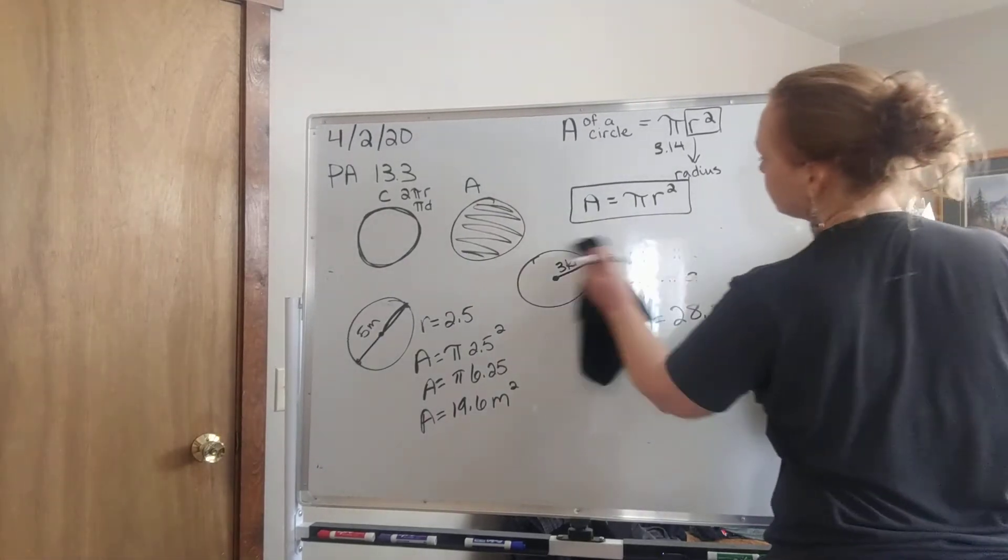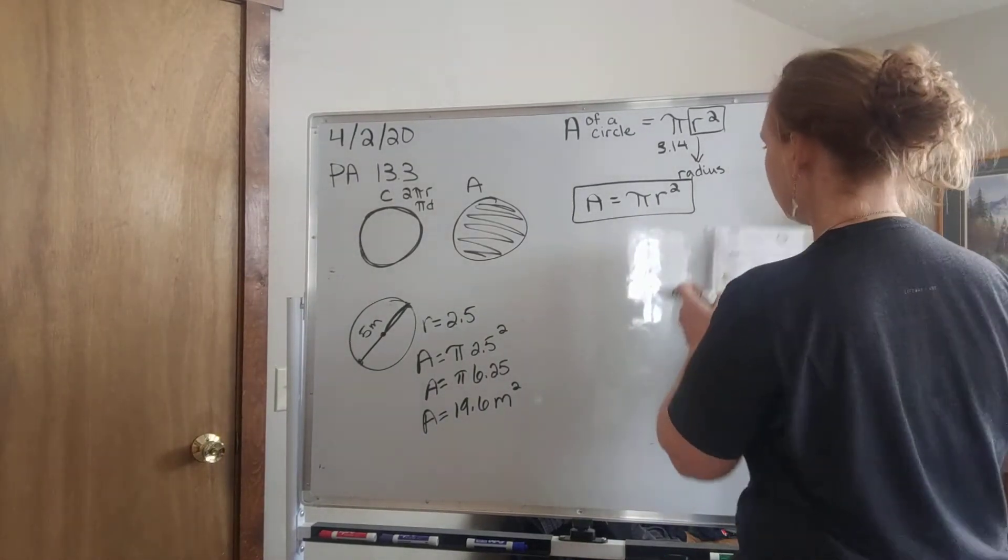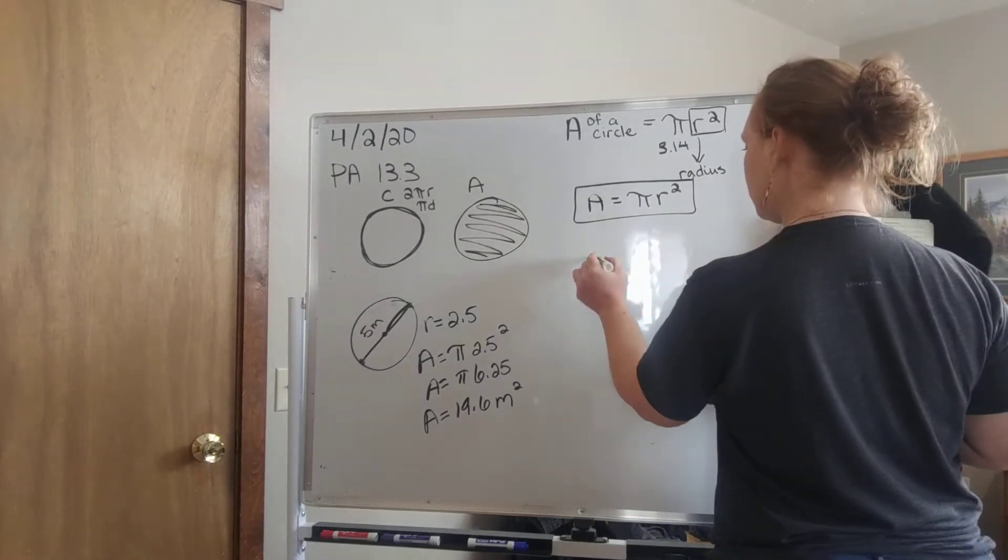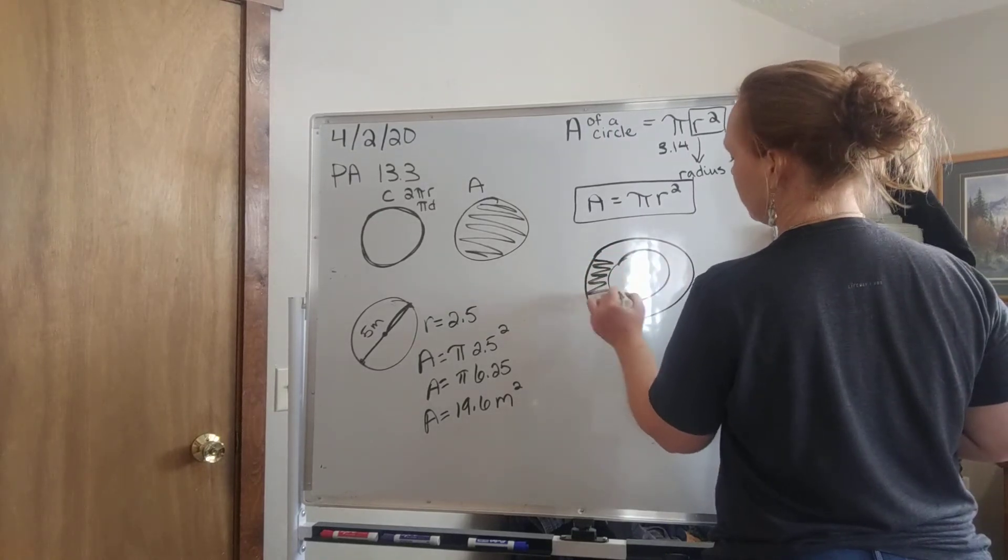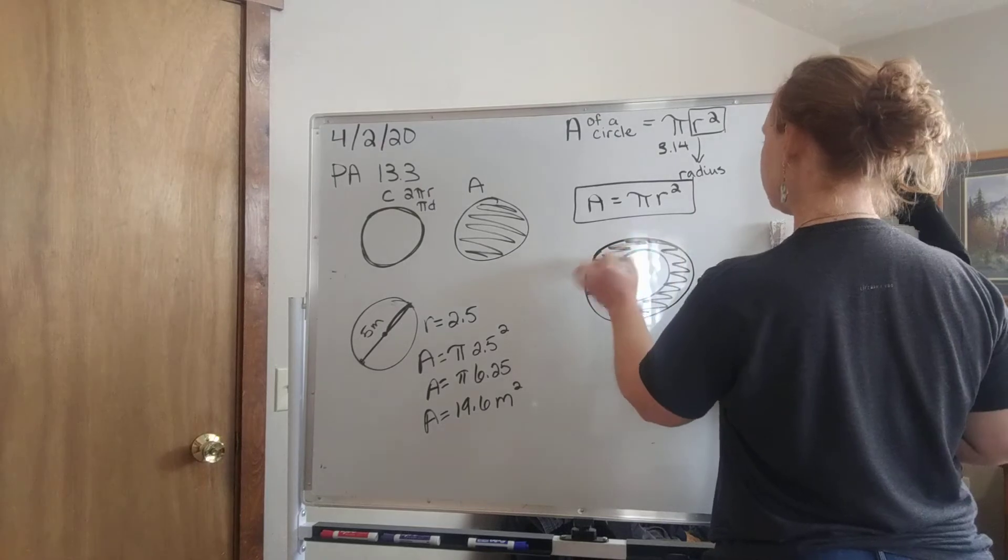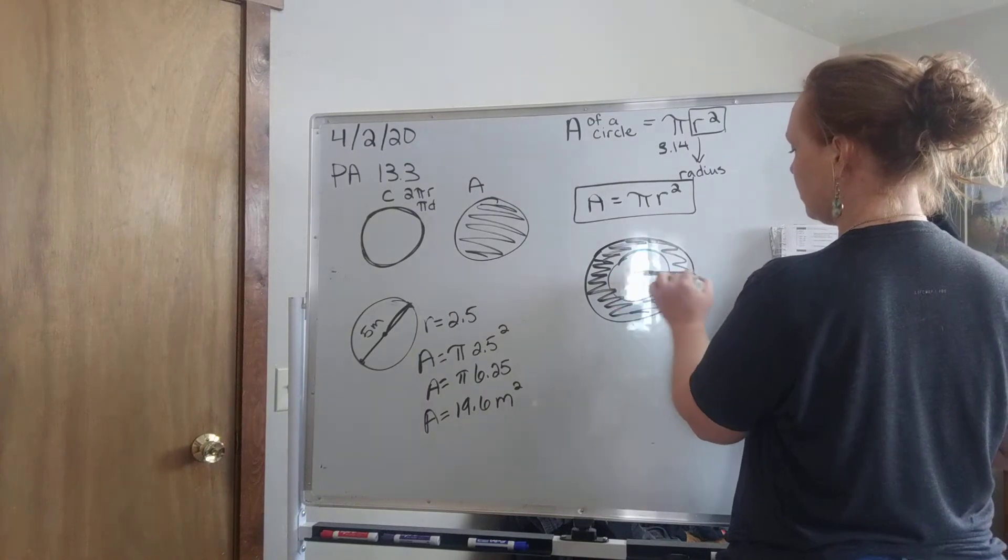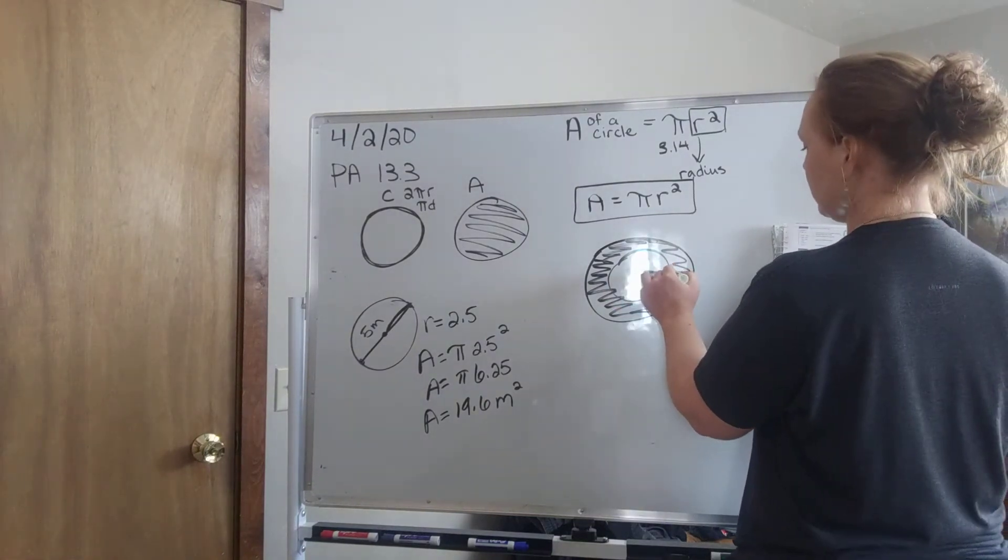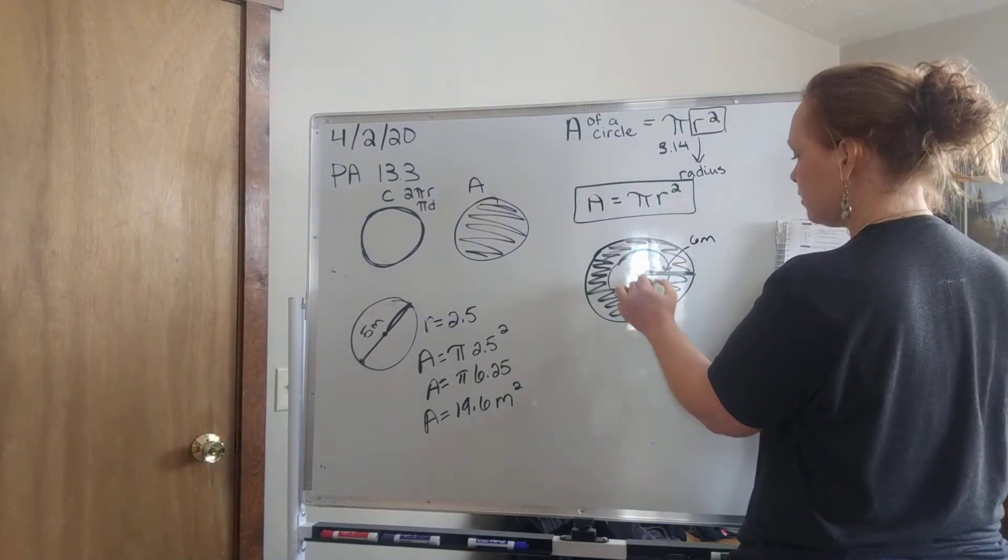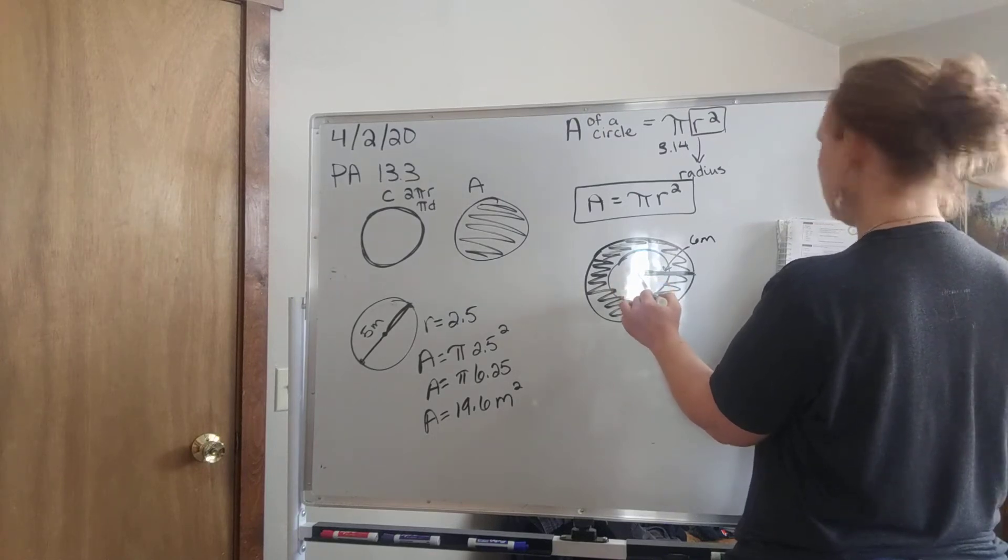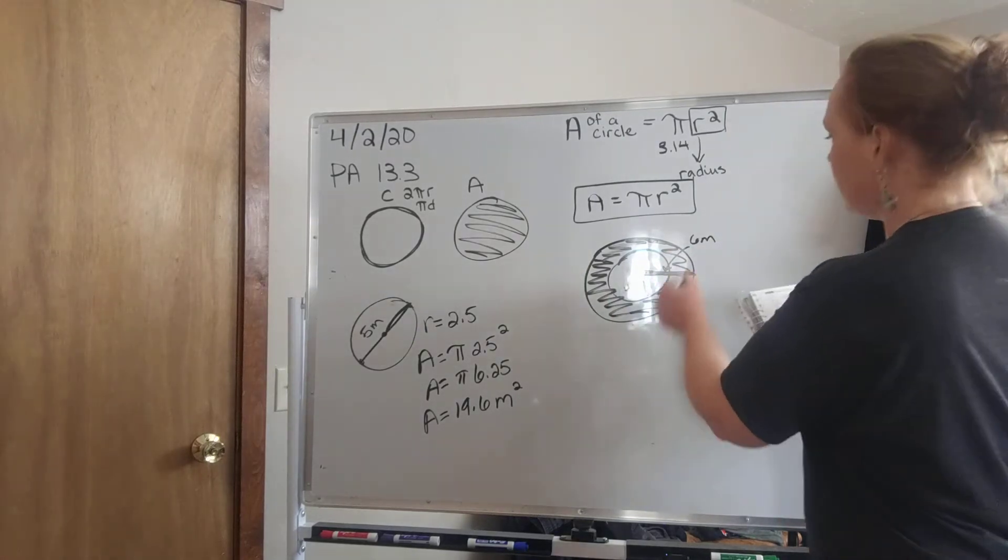Example three. Find the area of the colored region. So this is an interesting problem. We have two circles, one inside the other, and only this part is colored in. But they give us the two radius. They give us a radius for the entire, for the bigger circle, which is 6 meters. I'm going to go ahead and write it out here. 6 meters. And then they give us the shorter radius for the smaller circle, and it is 4 meters.